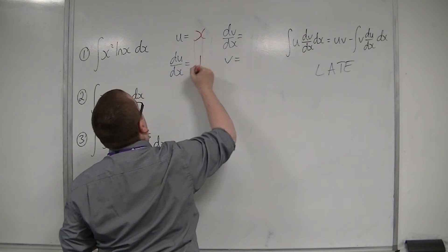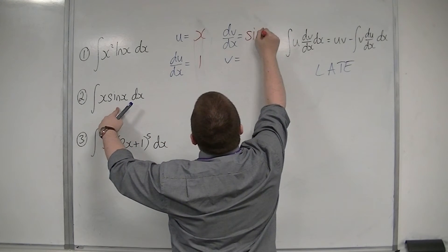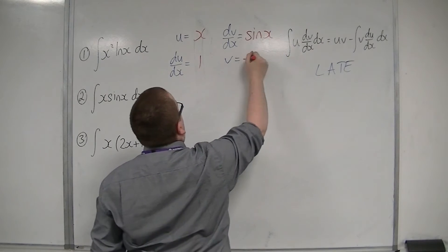And so du by dx is 1. dv by dx then must be sine x. Integrate that, becomes minus cos x.